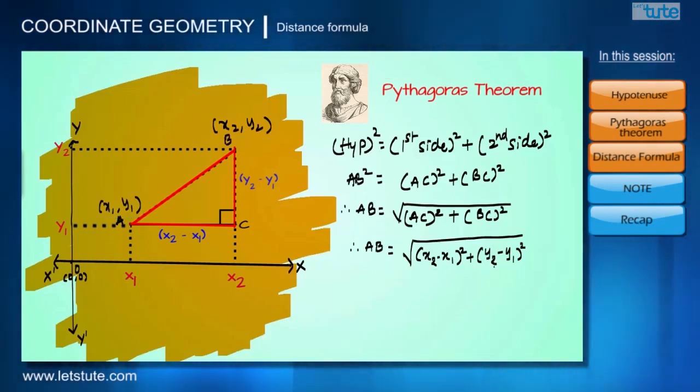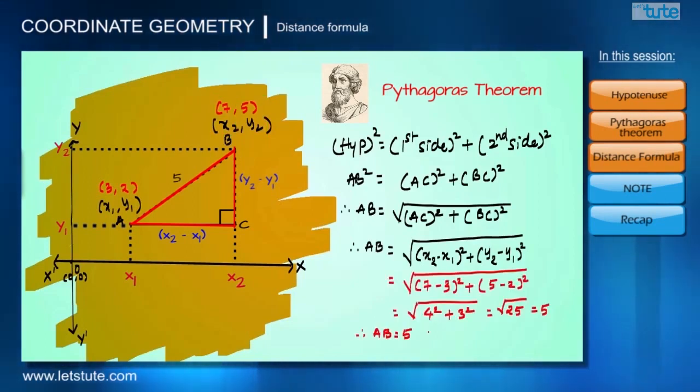So let's take coordinates for A as (3, 2) and coordinates for B as (7, 5). So now we can see that x₁ is 3, y₁ is 2, x₂ is 7, and y₂ is 5. Therefore, when we use distance formula for this, we get AB equal to 5 units.